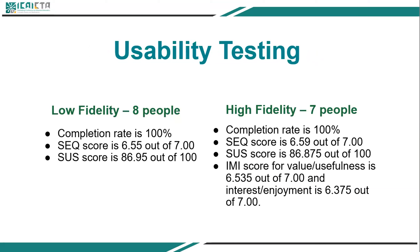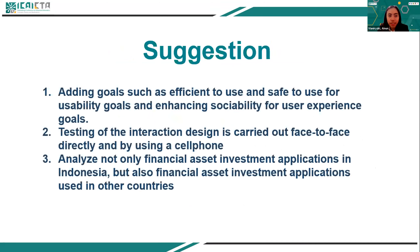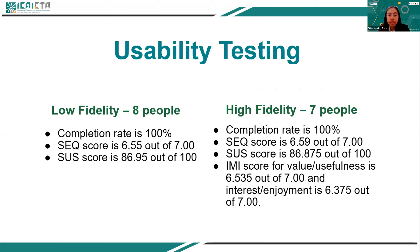Testing was done using the Single Ease Question (SAQ), System Usability Scale (SUS), and Intrinsic Motivation Inventory (IMI). For the low fidelity prototype, tested on eight people, the completion rate was 100%, the SAQ score was 6.55 out of 7, and the SUS score was 86 out of 100. For the high fidelity prototype, tested on seven people, completion rate was 100%, the SAQ score was 6.59, and the SUS score was 86 out of 100. The IMI score for value or usefulness was 6.5 out of 7, and for interest and enjoyment was 6.3 out of 7.